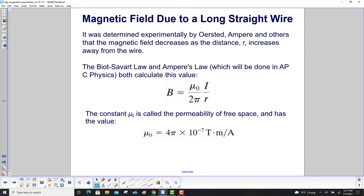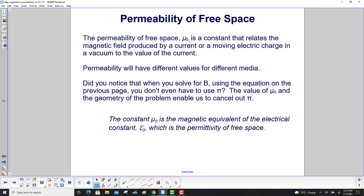It was determined experimentally by Ørsted, Ampere, and others that the magnetic field decreases as the distance r increases away from the wire. The Biot-Savart law and Ampere's law, which will be done in AP Physics C, both calculate this value. The magnetic field is μ₀i/(2πr). μ₀ is called the permeability of free space and has the value 4π × 10⁻⁷ tesla meters over amps. The nice thing about this constant is this 4π, when it's divided by 2π, you get rid of the π.